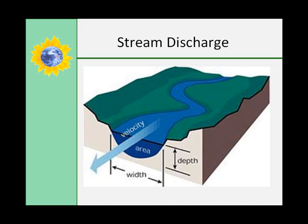The volume of water flowing through a stream during a unit of time is known as its discharge. In general, the greater the discharge, the greater the volume of sediment moved. Note that the discharge of a wide channel slowly flowing over a gentle slope is normally exceeded by the discharge of a narrow channel flowing quickly down a steep slope.